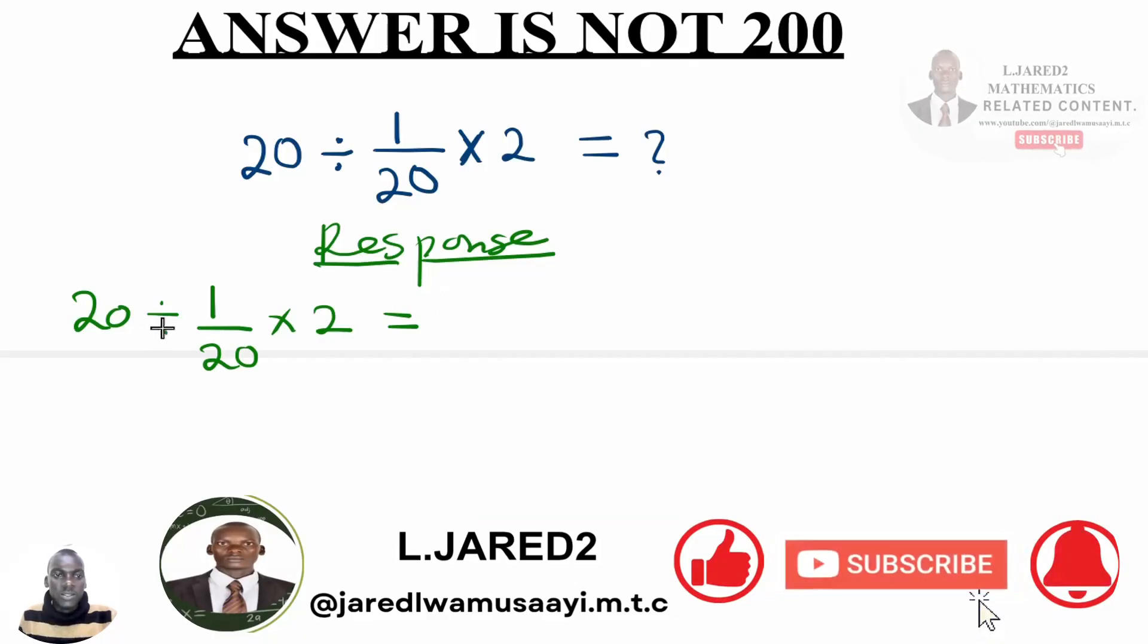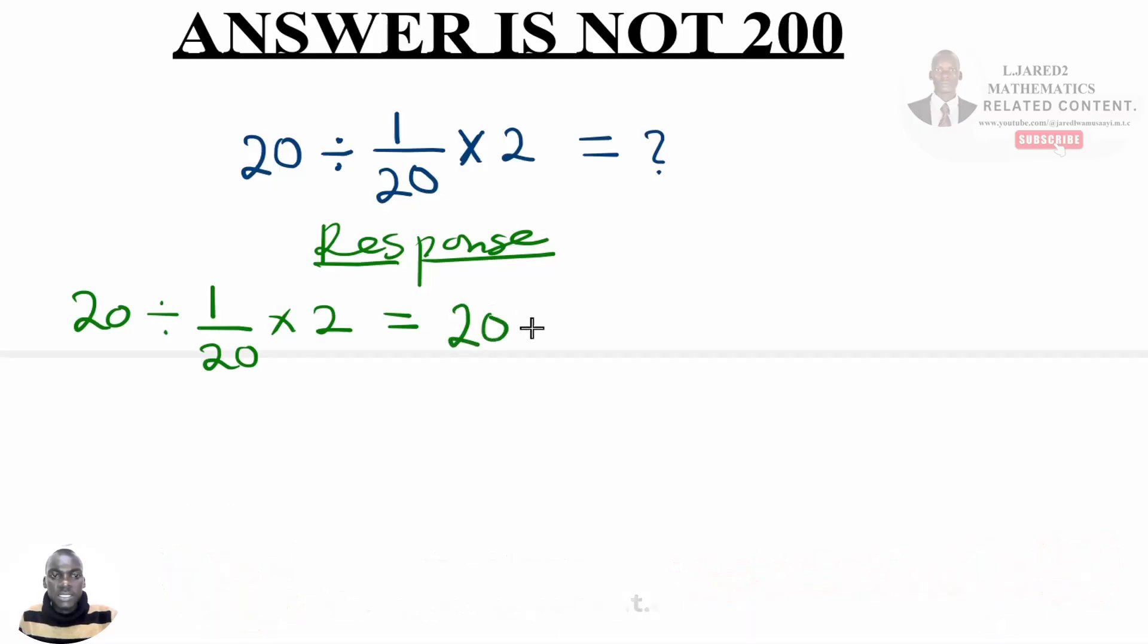So one could manipulate this question, like having 20 divided by 1 divided by 20 multiplied by 2. If we say that maybe this 20 divides by 2 to get 10, then this by 2 to give us 1, which at the next step we shall have 20 divided by 1 out of 20.